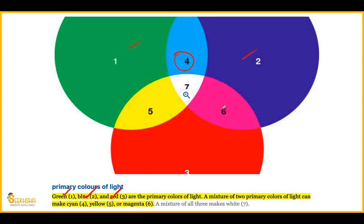If you mix red and blue, it will form magenta color. So if you mix green, blue, red, cyan, yellow and magenta — all 6 colors — then it will form a 7th color, which will be white. With primary colors, we call cyan, yellow and magenta the secondary colors of light. When you mix all these colors, white color is formed.